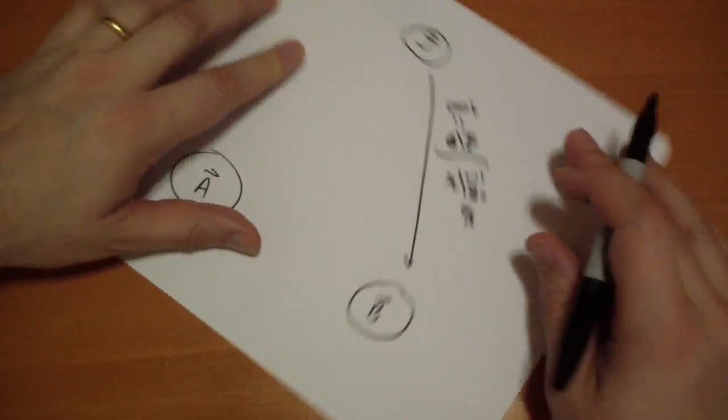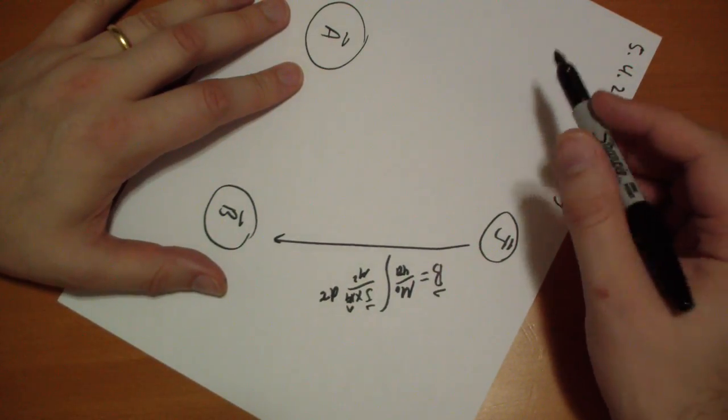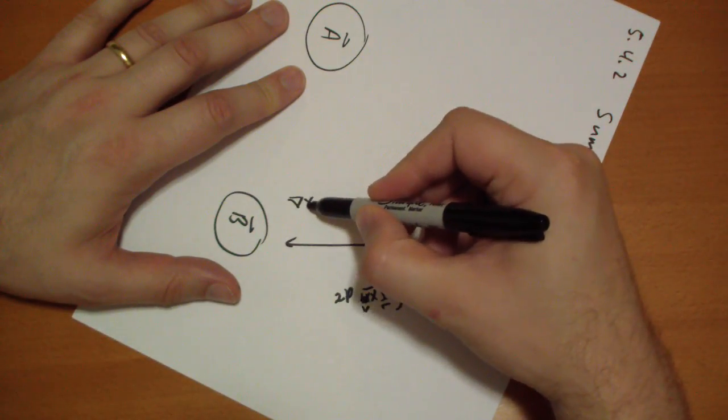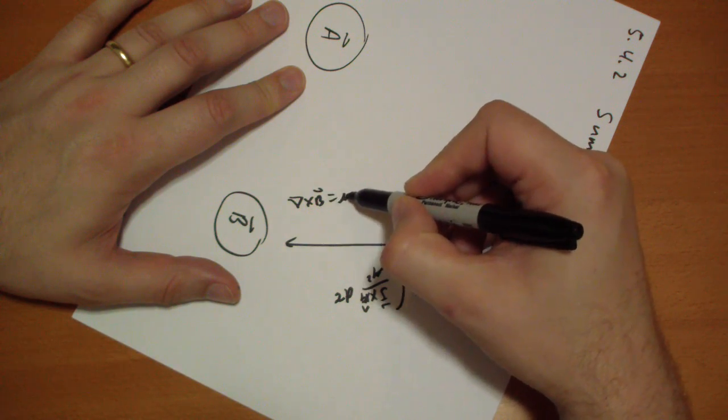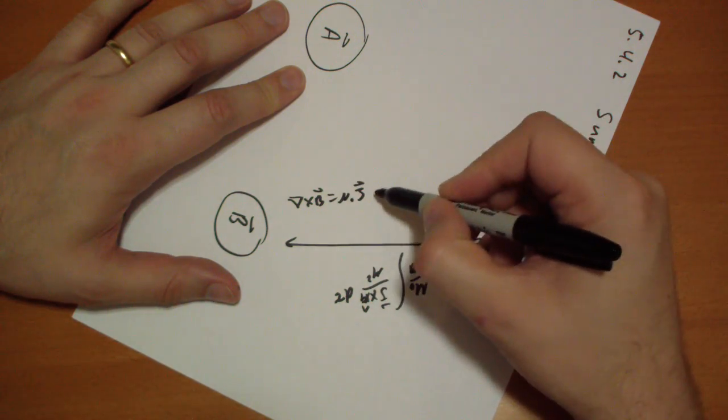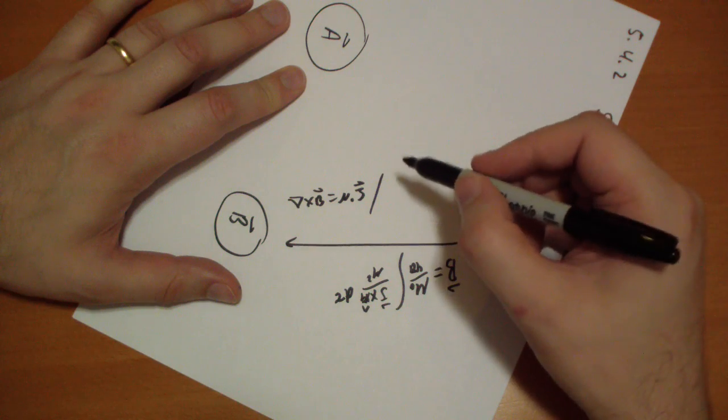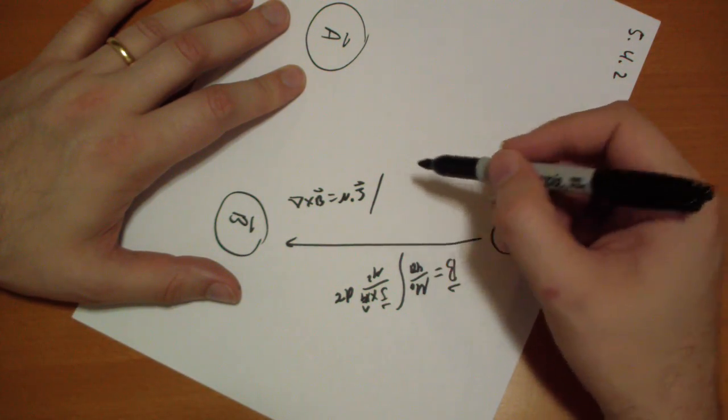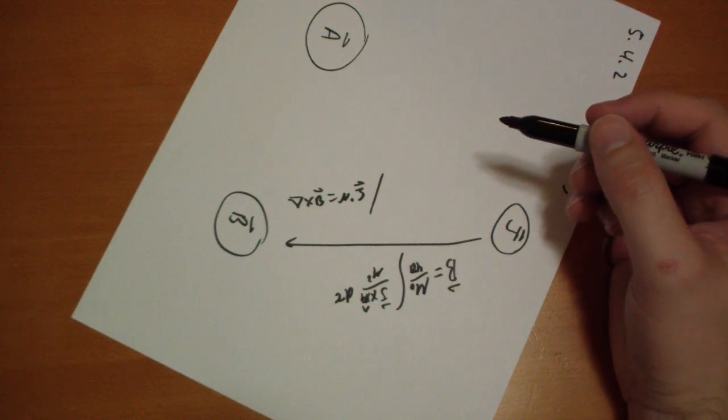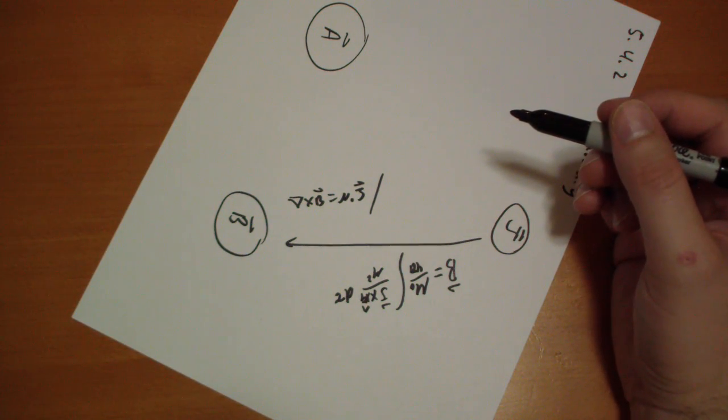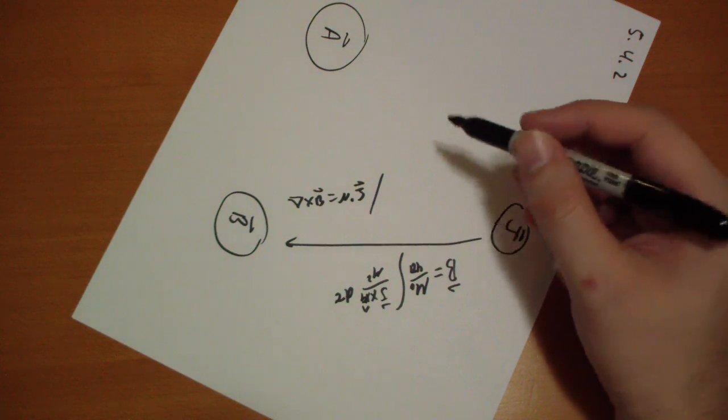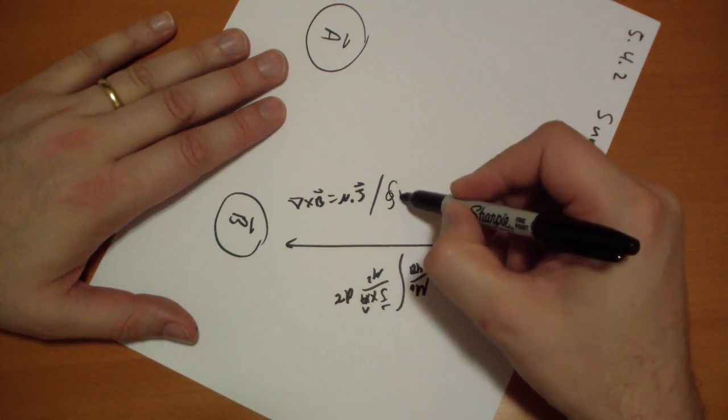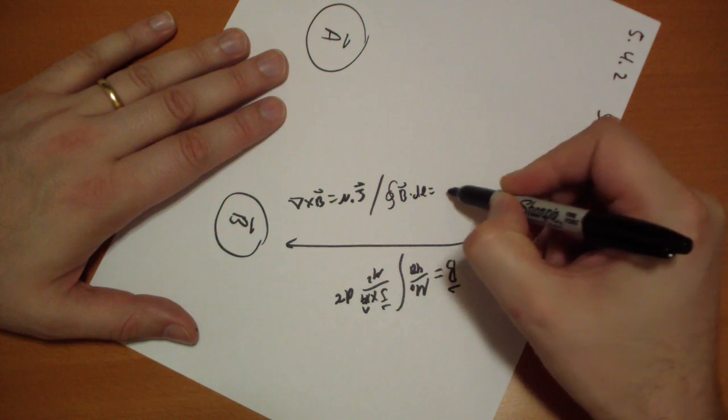What if we wanted to go from B to J? Well then we know that the curl of B is equal to mu naught J. And we also know this can be expressed in integral form as well.